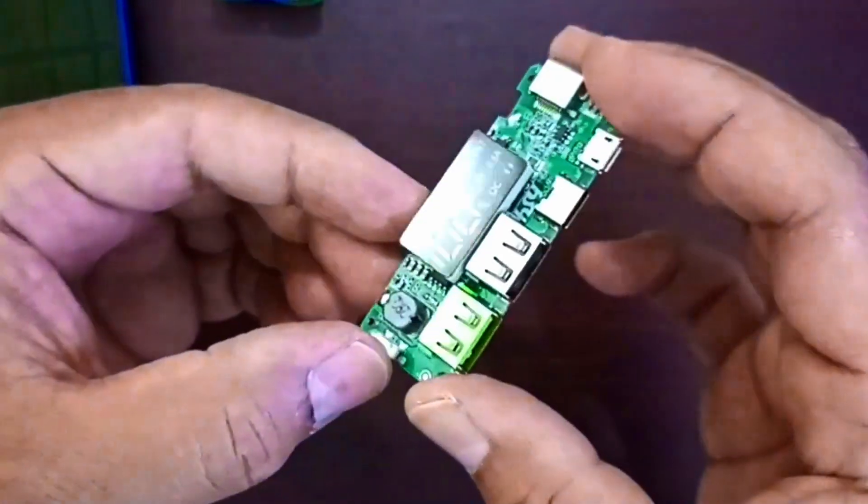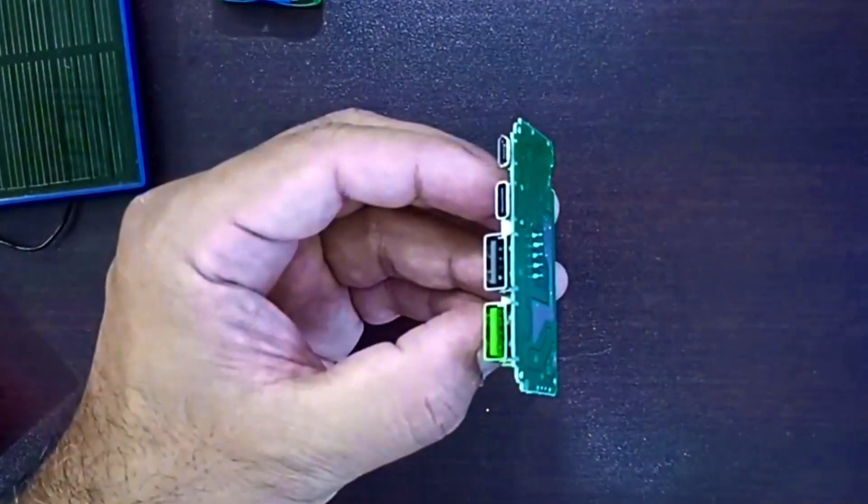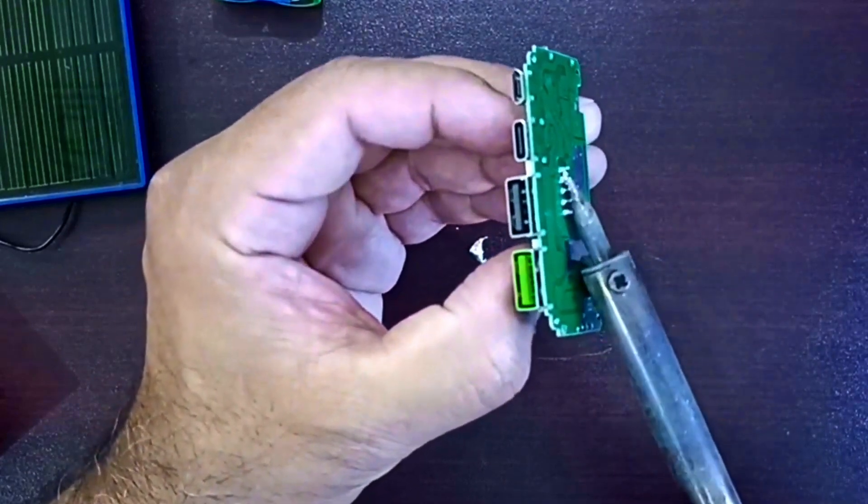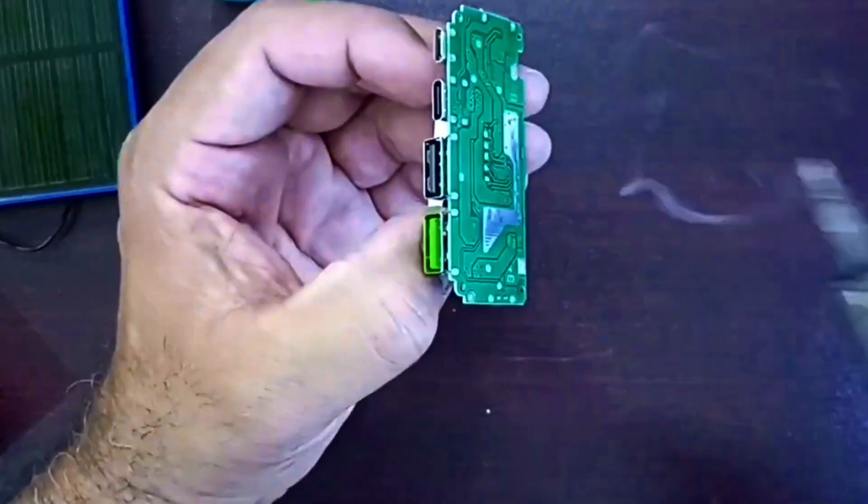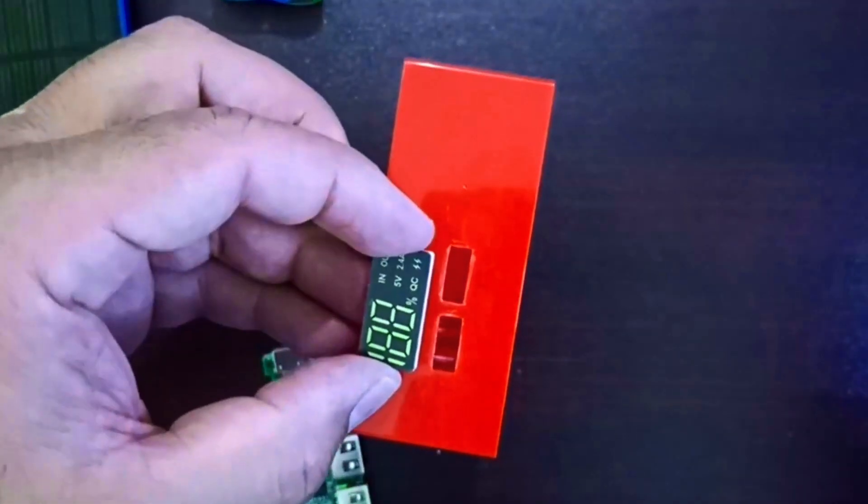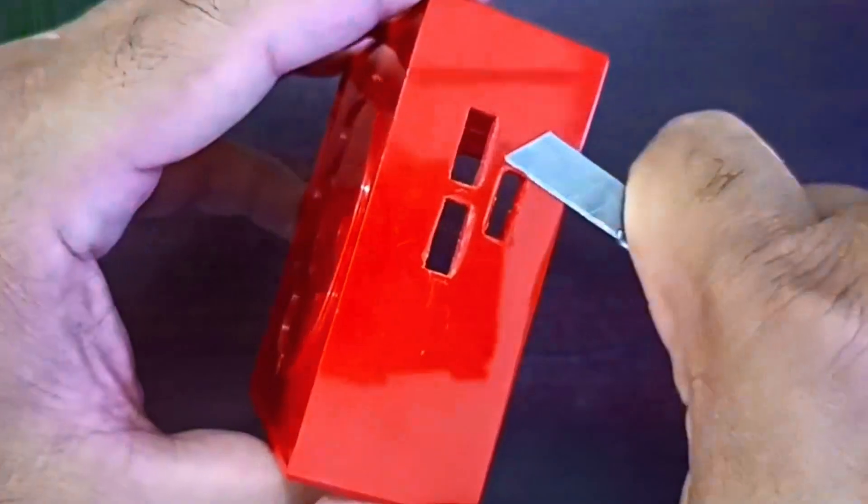The display sits too deep, so we'll desolder it and mount it separately. Pick a nice spot for it right where we can see the battery percentage easily. Cutting out a clean little window, melting, trimming, perfect fit.